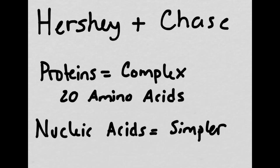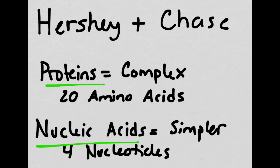Nucleic acids are much simpler. There are only four different kinds of nucleotides, and there are only a few different types of nucleic acids, DNA, and a few different types of RNA. Hershey and Chase set out to prove which of these two things, proteins or nucleic acids, was responsible for passing along genetic material.